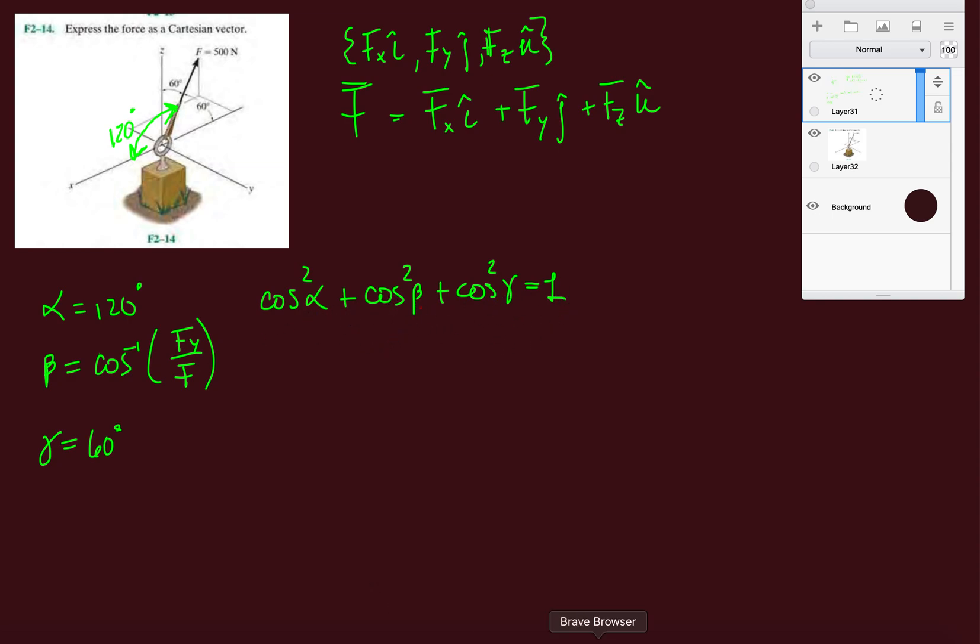This is taken just from the book. So this will be cosine 120 squared, which is 0.25, plus we don't know this one, and then cosine gamma squared - cosine 60 squared - so 0.25 equals one. So cosine squared beta is 0.5.